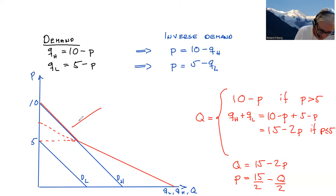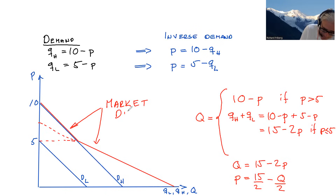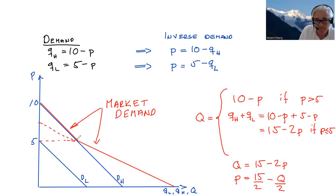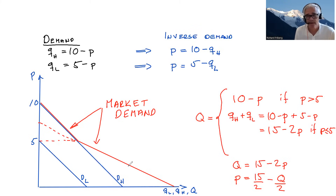The red line here illustrates the market demand. The key point is that as price is lowered and additional consumers come into play, the aggregate market demand curve is flatter than the individual demand curves. This is how we do it.